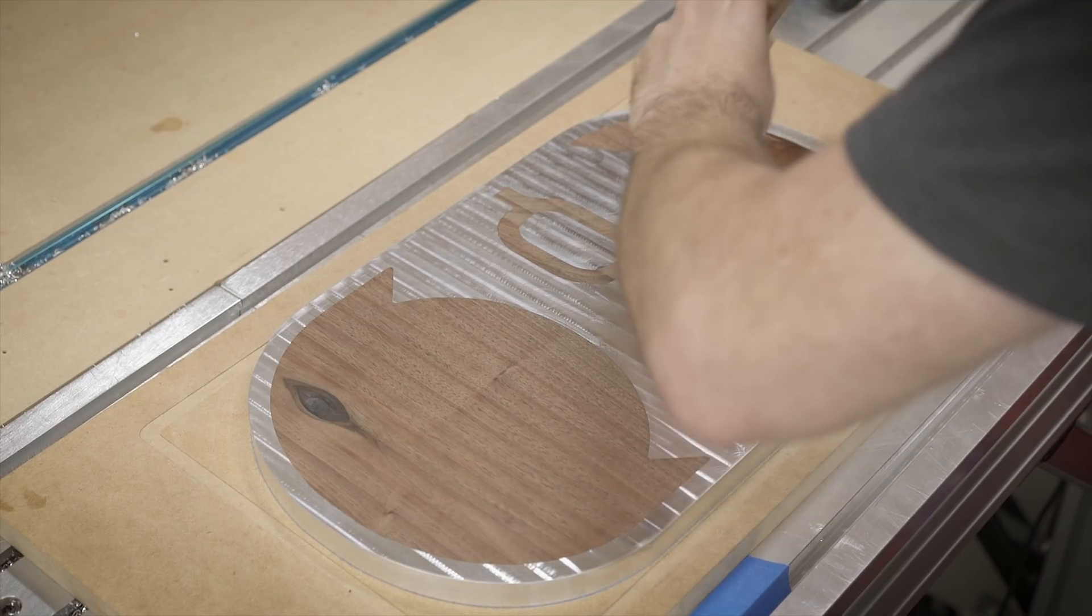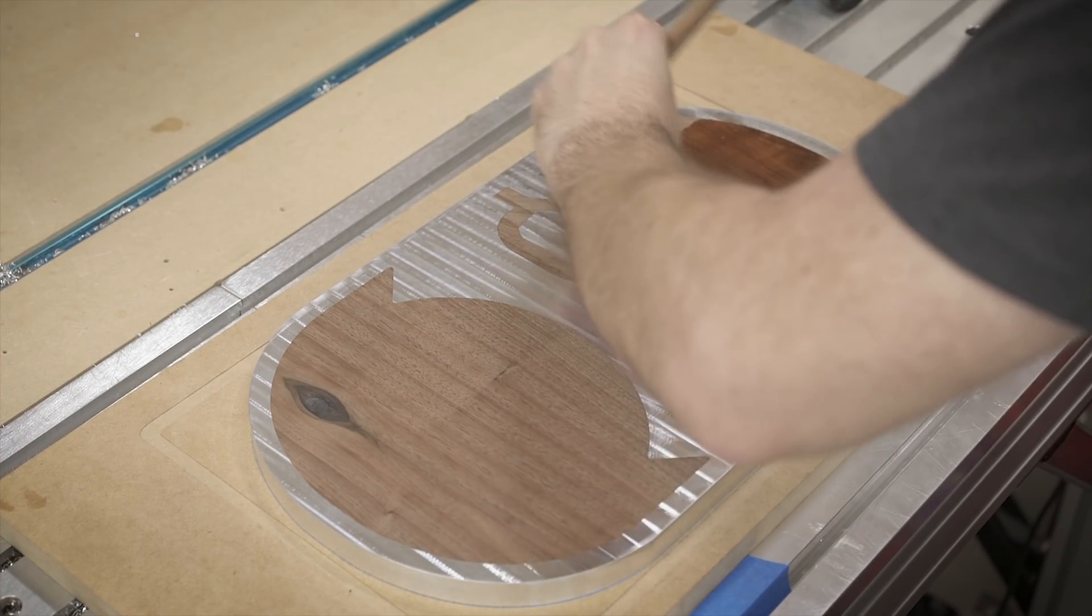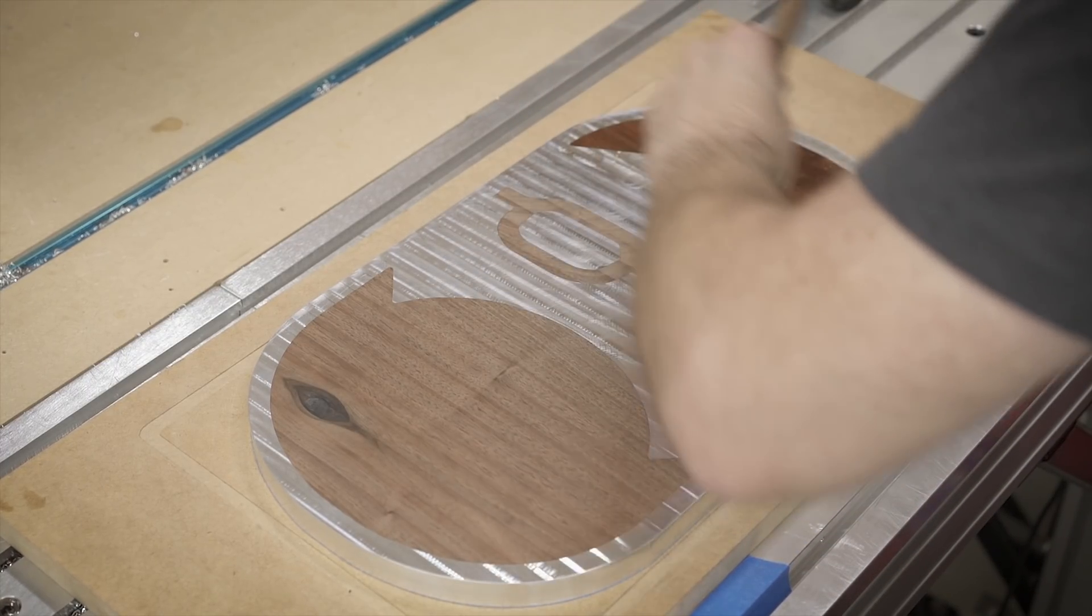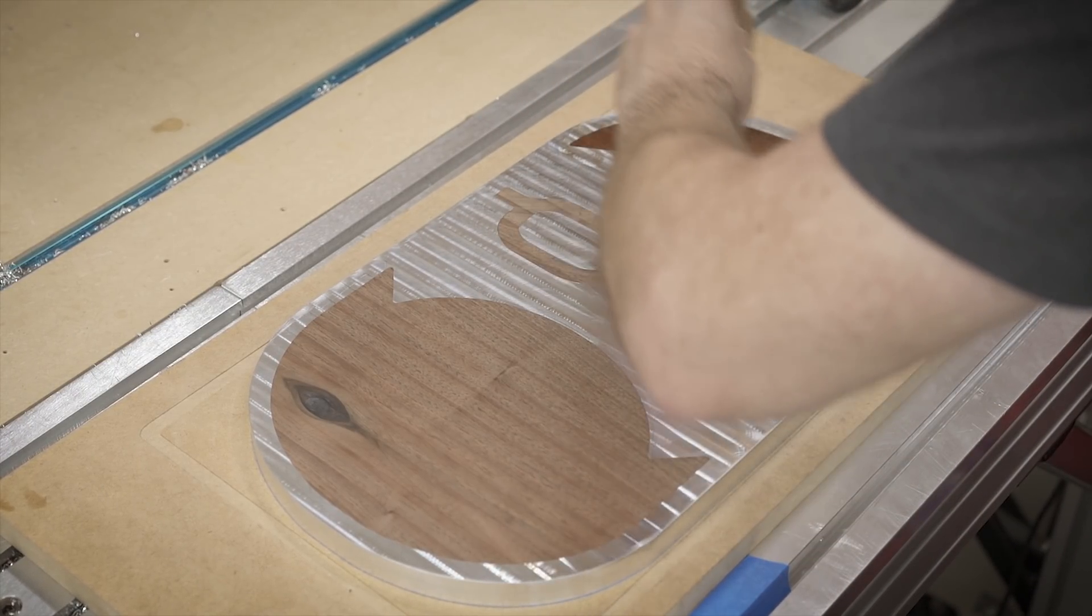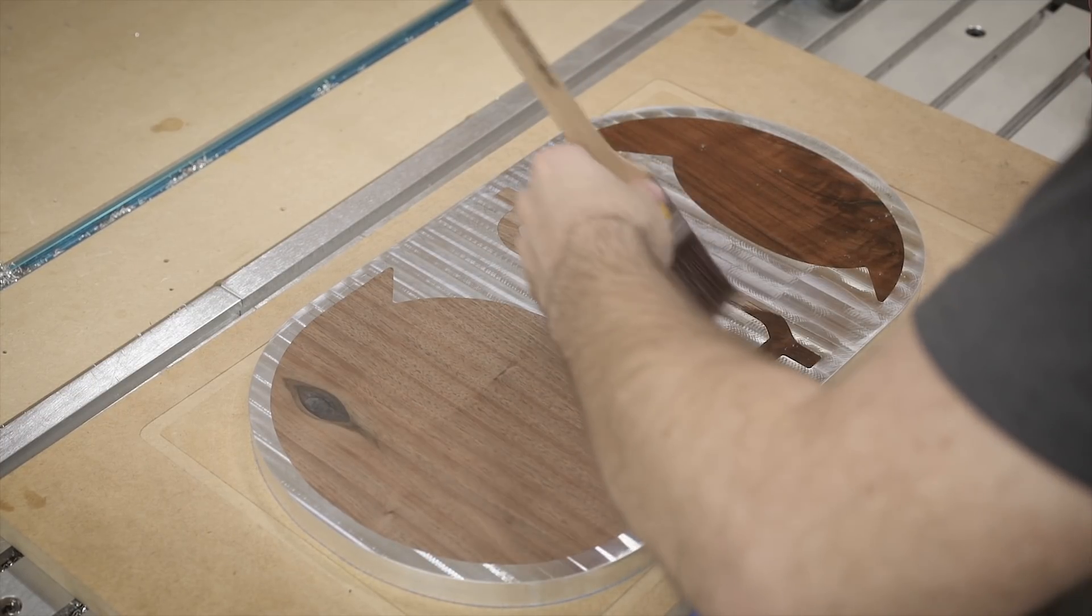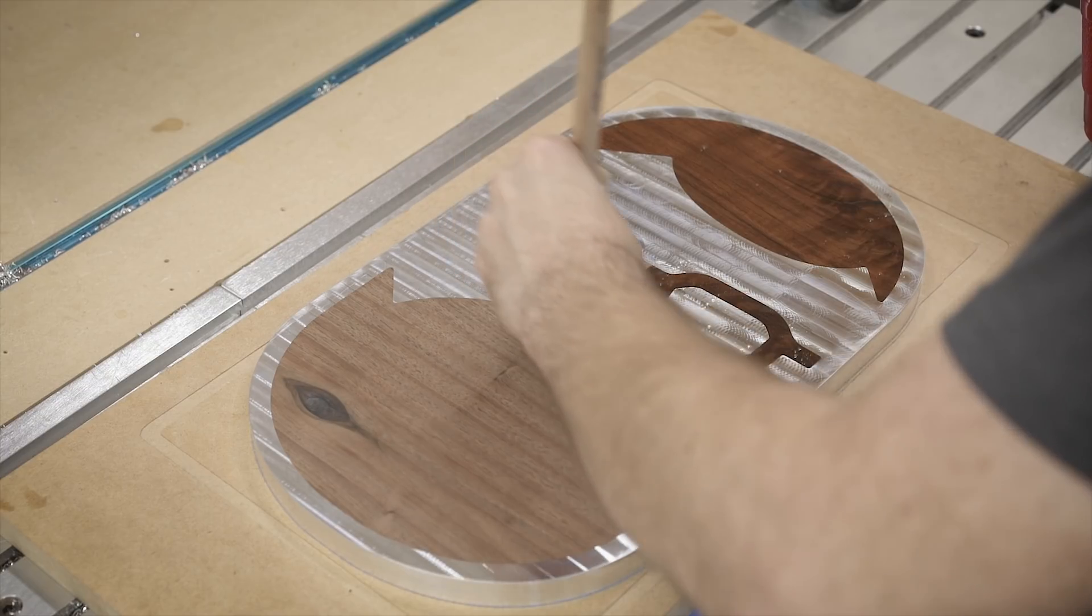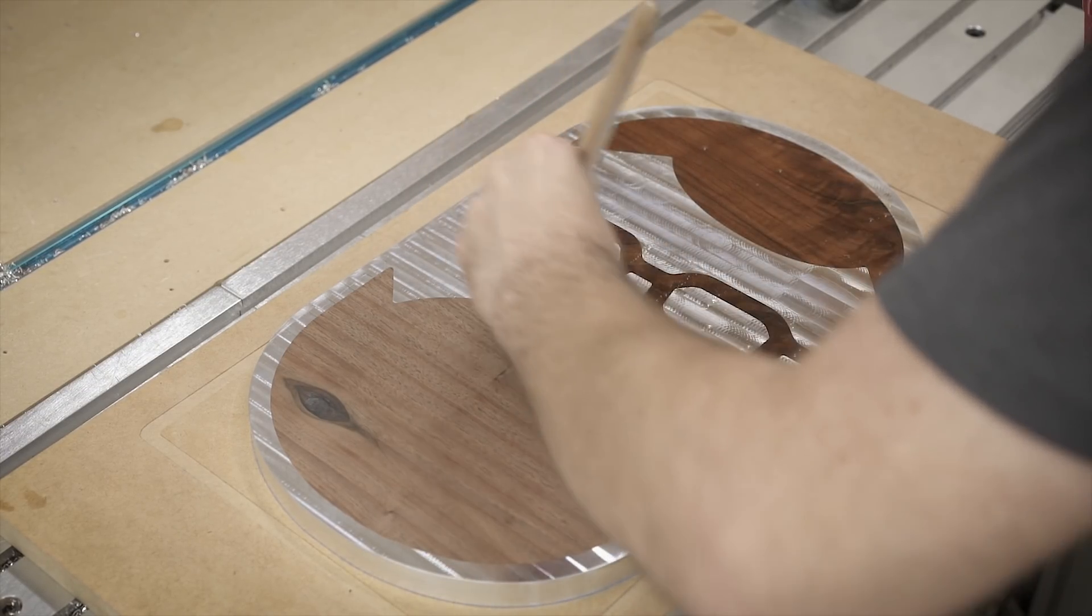Applying the sealer is pretty straightforward. You just brush it on, let it soak in, wait 24 hours, brush it on, let it soak in, wait 24 hours, brush it, let it soak in, wait 24 hours. I'm doing a total of three coats here just so I make sure that nothing gets into the grain and that those pores are nice and sealed.